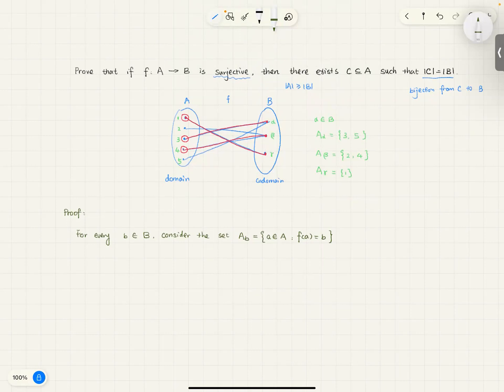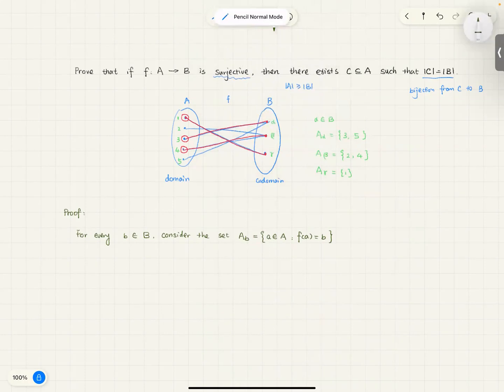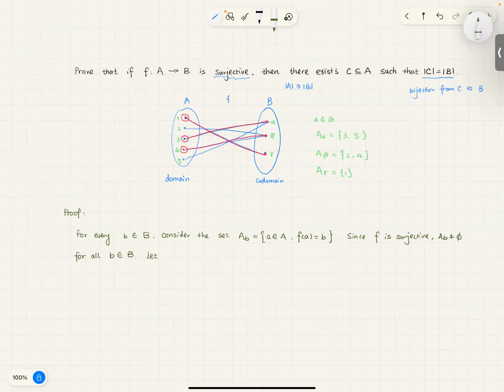And now, as I mentioned, after I picked all my sets, so now I want to pick one element from each of the sets. But before we do that, we want to make sure every single such set, they are non-empty. And they are non-empty. Why? Because it's surjective. So, since f is surjective, we know that A_b is not empty for all b in B. Well, now we know it's not empty, so you can always pick elements from them.